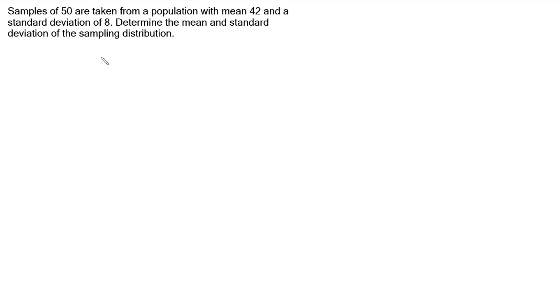We want to determine, using this information, the mean and standard deviation of the sampling distribution. We've got a population which is following some sort of distribution — we're not told — and we want to find the mean and standard deviation of the sampling distribution.